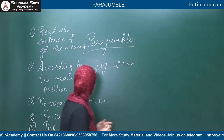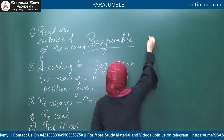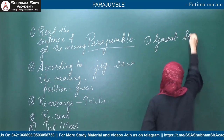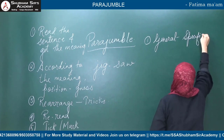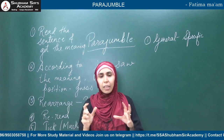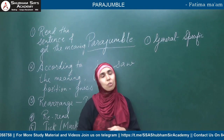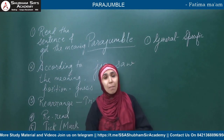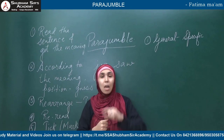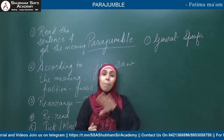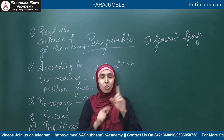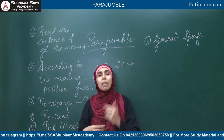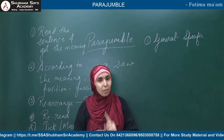Now I'll tell you some tricks — some re-arrangement gimmicks for para jumble. The first trick: a general statement always comes first, followed by specific. In writing style, you always speak about general things first, then specific things. For example, first I'll speak about India, then Maharashtra, then Aurangabad, then Nirala Bazaar. First a statement about all boys, then specifically about Rahul — clear with the first trick?